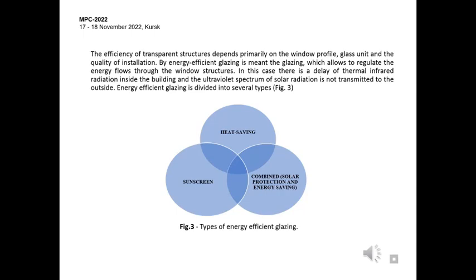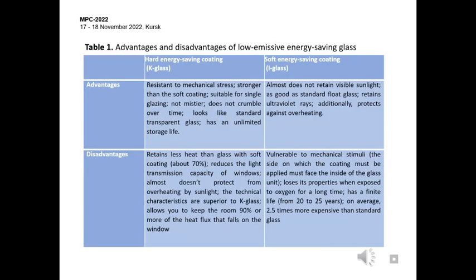Energy efficiency glazing is divided into several types: heat saving, sunscreen and combinate. Low emissive glass is the most common type of energy efficiency glazing as it has high light transmission and transparency and quite high thermal insulation values. A distinction is made between hard energy saving coating K glass and soft energy saving coating I glass.